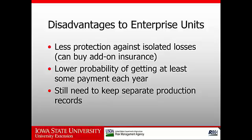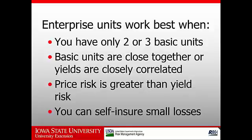If we're concerned about the probability of an isolated loss — usually due to hail or strong winds — you can purchase a supplemental hail and wind policy. These are private policies sold by various crop insurance companies, and they do pay indemnities for isolated losses on small land areas. Enterprise units work best if we only have two or three basic units, and if the farms are fairly close together geographically.